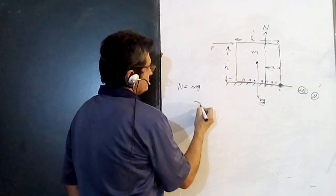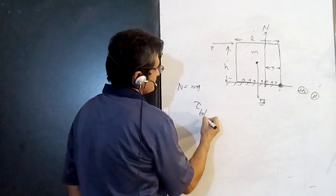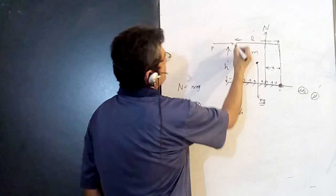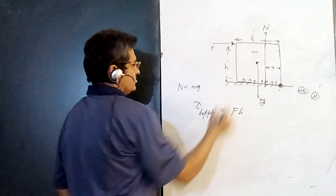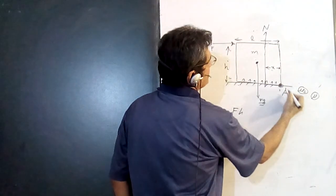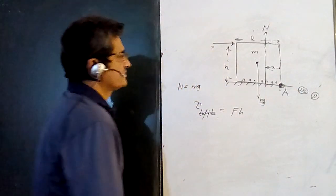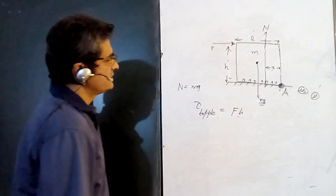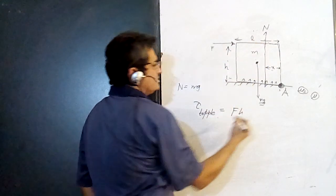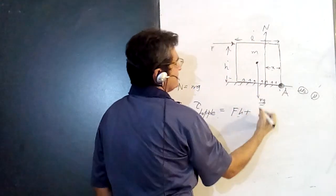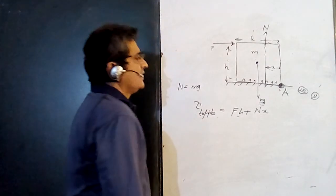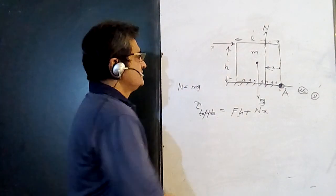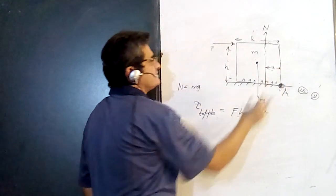Now, for the body to topple, what are the torques which want to topple it? The toppling torque is F times H — force F is applied horizontally at height H. About this point, if I take the torques (moments), this is the toppling torque which is trying to topple it.